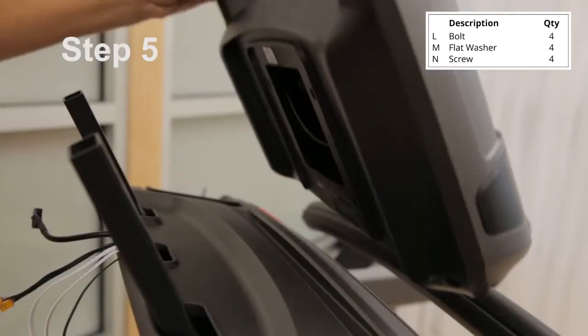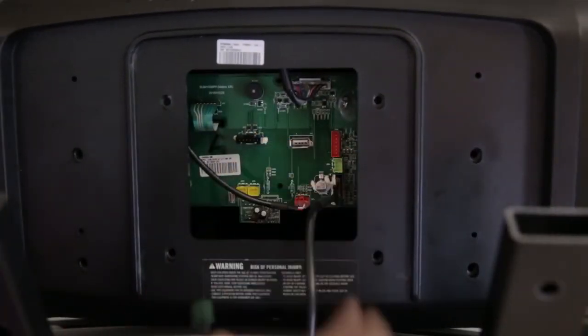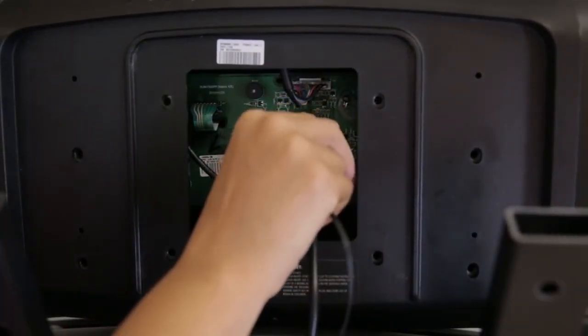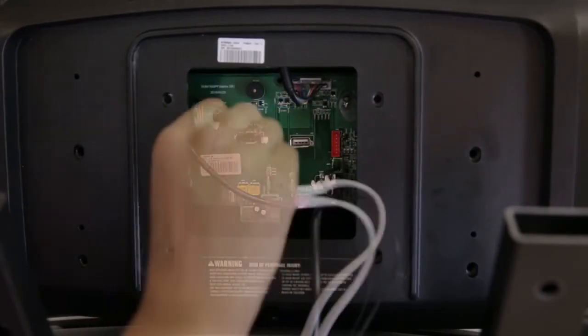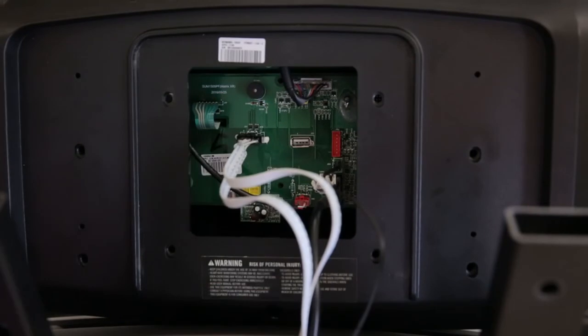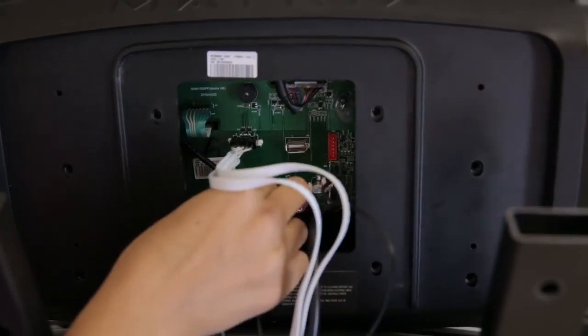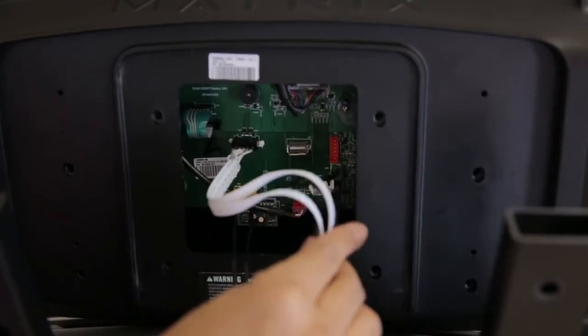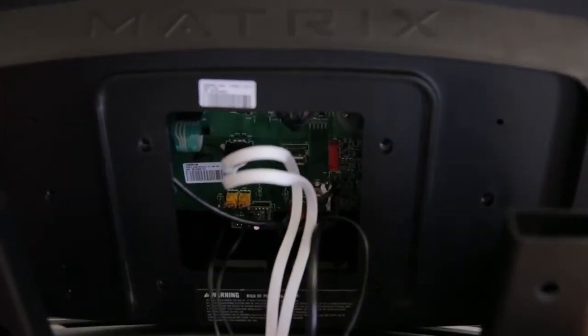Place the console onto the console base. Gently pull the cables and connect them to the console control board. Gently tuck the cables into the console and set the console in place. Be careful not to pinch any wires.